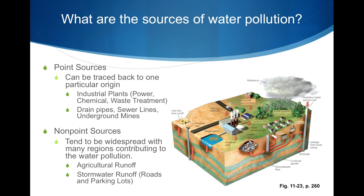There are two categories of pollution: point and non-point source. Point source pollution can be traced to a single source such as industrial power plants, drainage pipes, and sewer lines. Non-point source pollution cannot be traced to a single source and can be widespread throughout a region. Examples of non-point source pollution are agricultural and stormwater runoffs.